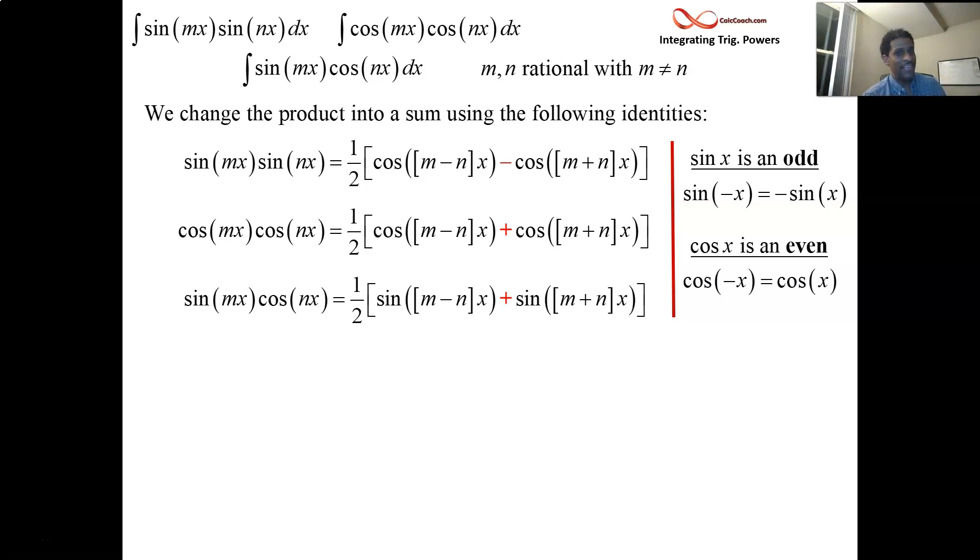Alright, let's take a look at our example. It's the final example in this series. We're trying to multiply sine of 3x times the cosine of 5x and find its antiderivative.